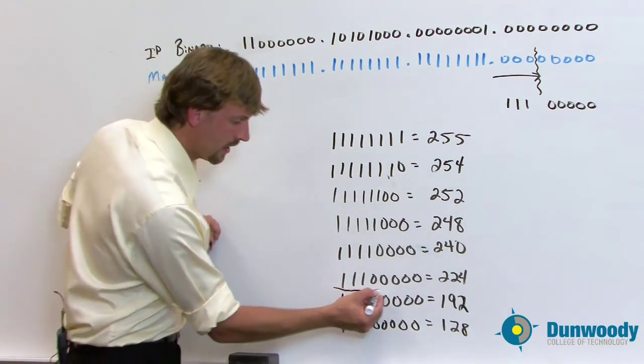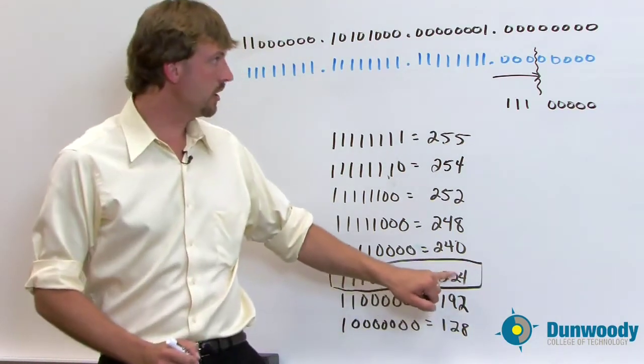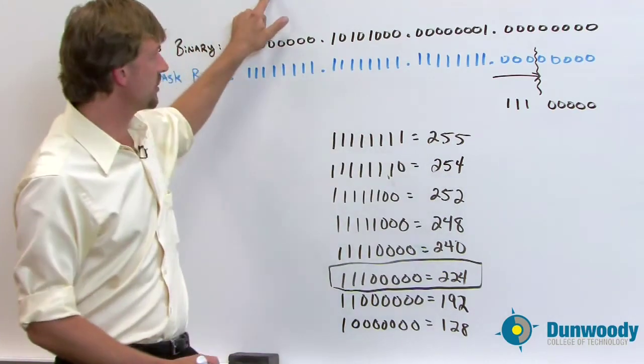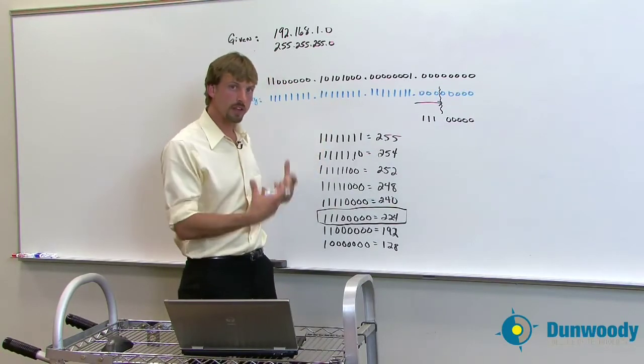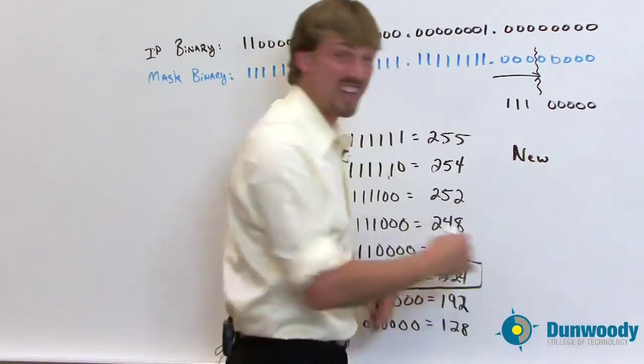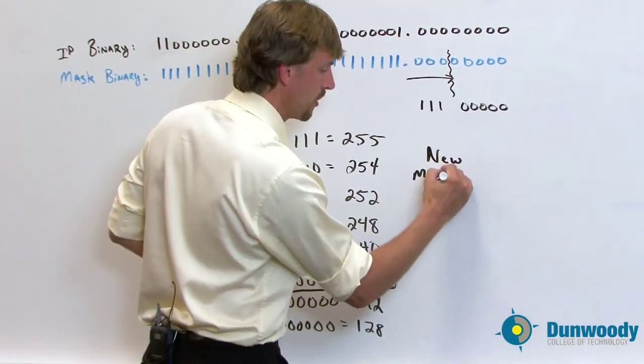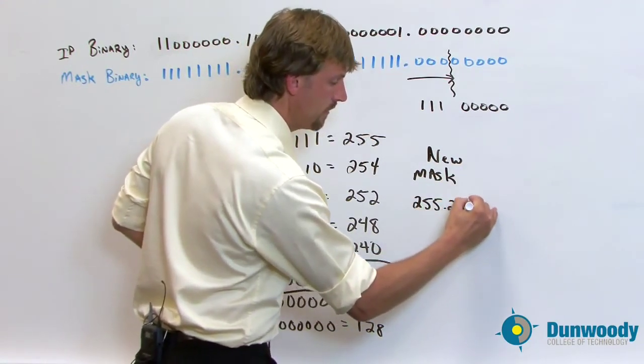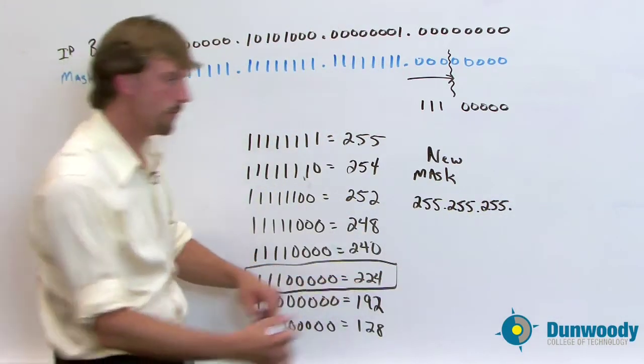So this value goes on top of what we already have, meaning the 255, 255, 255, 0 values that we were given in the first place. So our new mask, which is the second step of the subnetting process, is going to be completely 255, 255, 255.224.